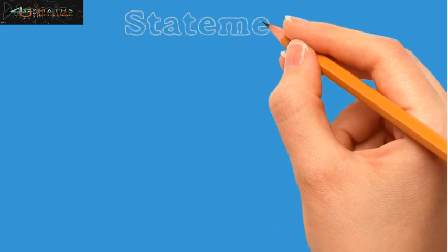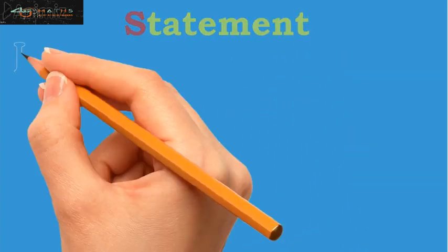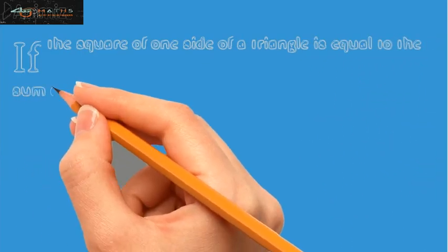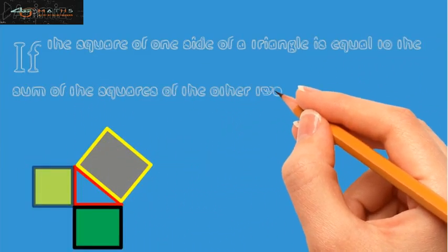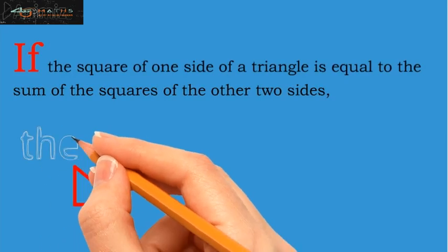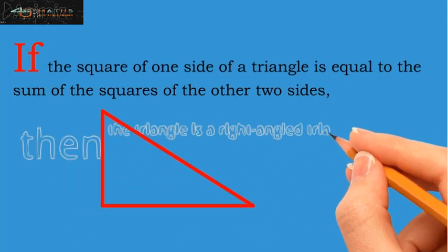Statement of the theorem: If the square of one side of a triangle is equal to the sum of the squares of the other two sides, then the triangle is a right angle triangle.